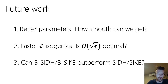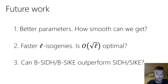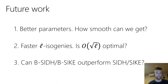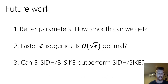As for future work, it all comes down to making B-side as fast as possible. The most obvious direction is to find better, smoother parameters — smoother parameters translate directly into noticeable speedups, since efficiency is heavily dependent on the smoothness bound. A more ambitious direction is to see if the O(√L) asymptotic isogeny complexity can be improved further; if so, that would be yet another boost that might make B-side as performant as SIDH.